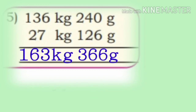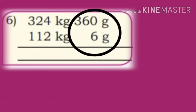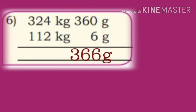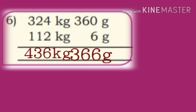So answer is 163 kg 366 grams. Now sixth one: 324 kg 360 grams plus 112 kg 6 grams. First add grams: 360 plus 6 is 366 grams. Now add kilograms: 324 plus 112 is 436 kg. So answer is 436 kg 366 grams.